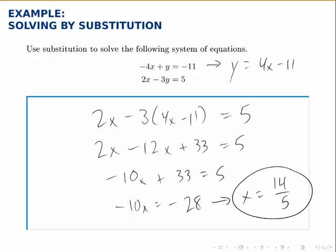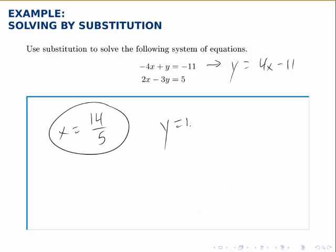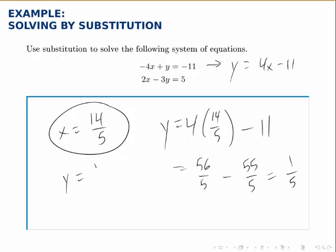Plugging 14 over 5 in for x and solving for y, then y equals 4 times 14 over 5 minus 11, or 56 over 5 minus 55 over 5, which equals 1 fifth. So y is 1 fifth.